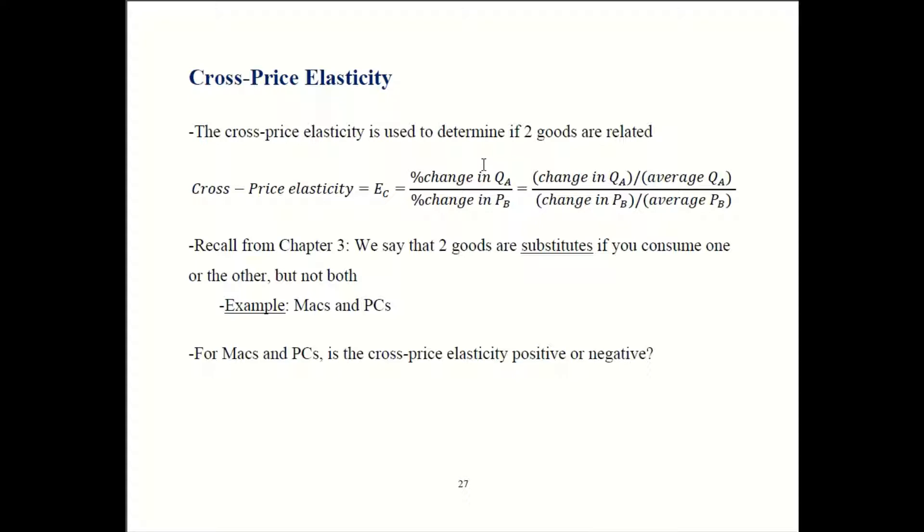So we use our midpoint method approximation. Once again, in intermediate micro, if you go on to take that class, you'll see a calculus based formula instead. With our approximation, the elasticity is change in the quantity of good A, divided by the average quantity for good A. All that's divided by the change in the price of B over the average price for good B.